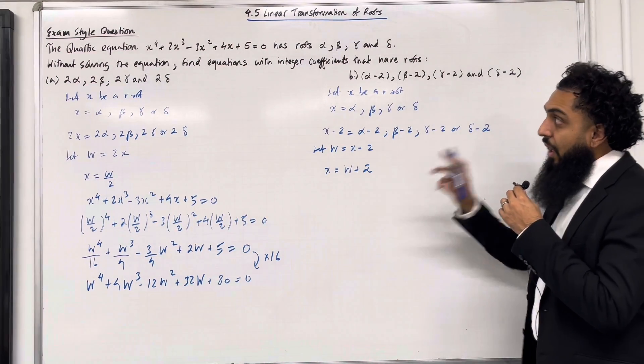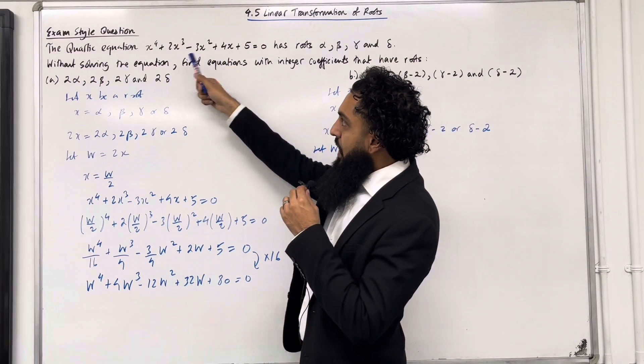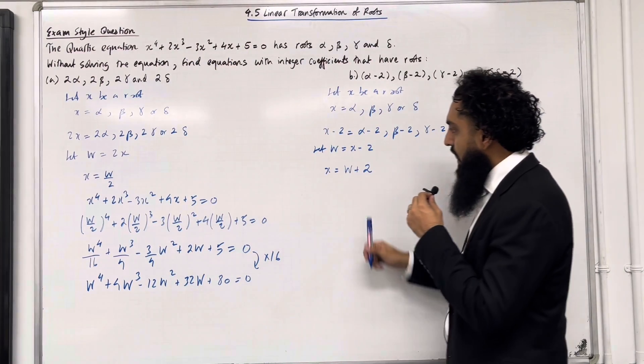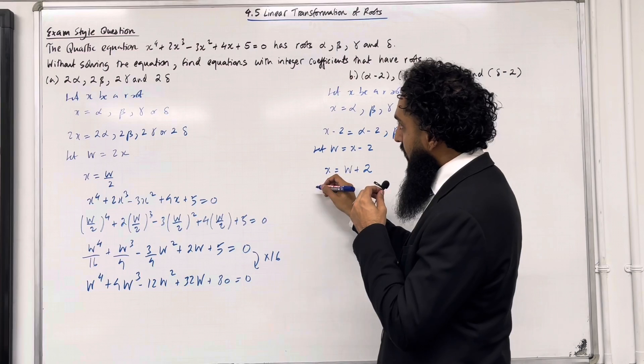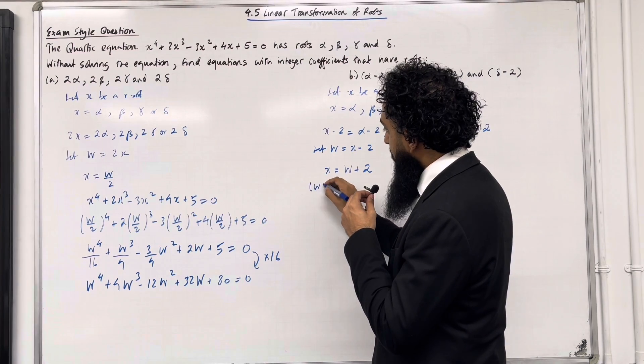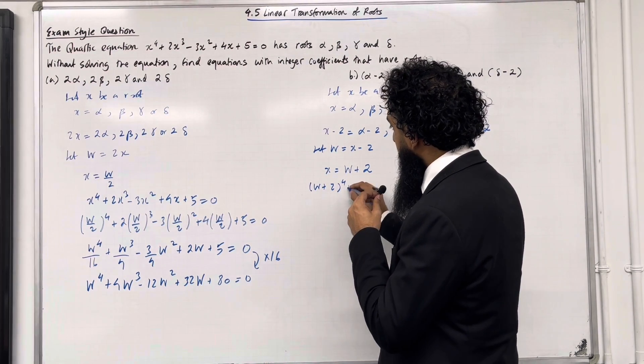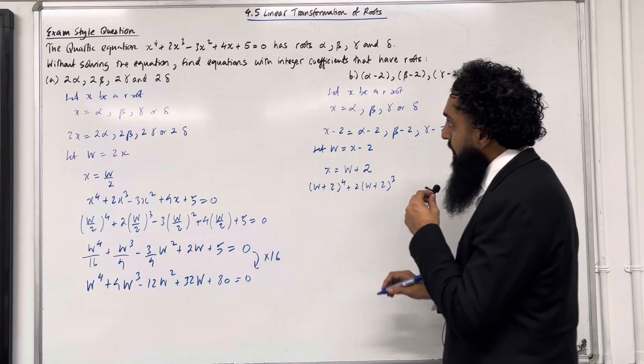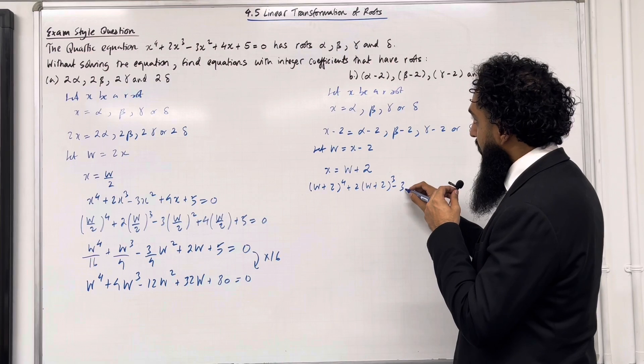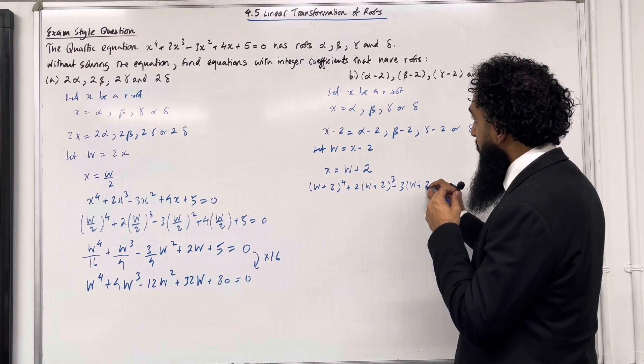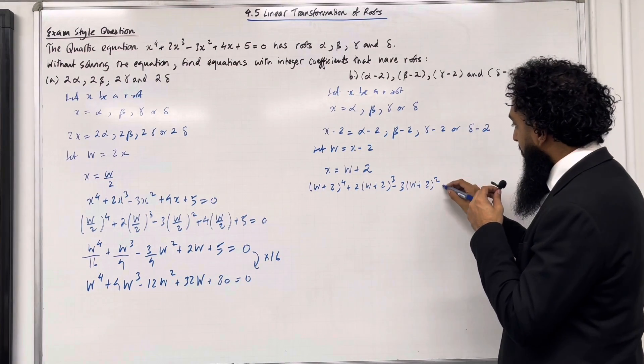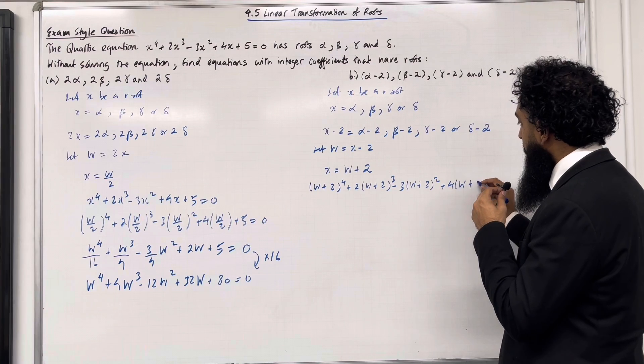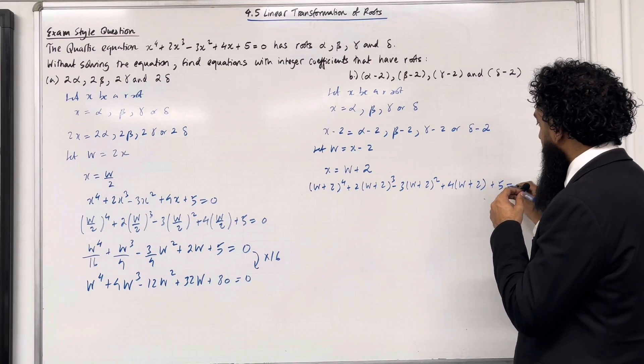Now I can go back to my original polynomial. In terms of x I can replace the x's with W + 2. So I've got (W + 2)⁴ + 2(W + 2)³ - 3(W + 2)² + 4(W + 2) + 5 = 0.